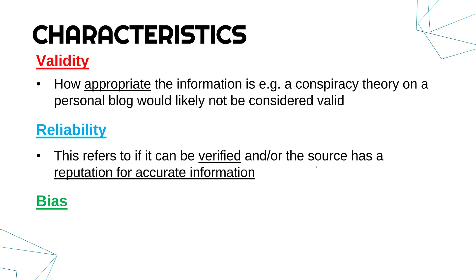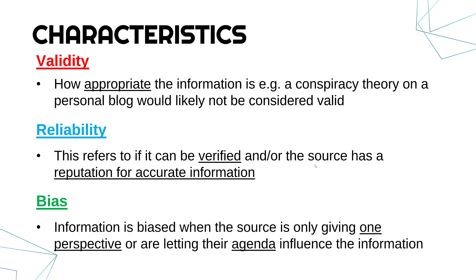Bias can damage your trust in accuracy. Bias is where the source is only giving one perspective or letting their agenda influence the information — really, the person is letting their opinion take over from the truth. So if I was making a review of smartphones and was really hammering Android while being really positive about Apple, but actually worked for Apple, I would be biased and potentially untruthful. Biased articles aren't necessarily bad straight away as long as you are aware of what the biases are and able to filter them. But if people are not honest about their biases, that's when it becomes poor quality information.